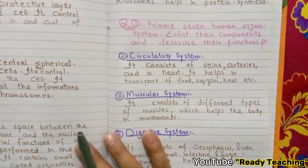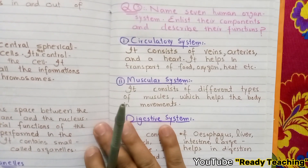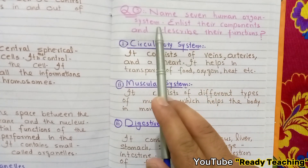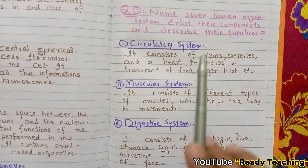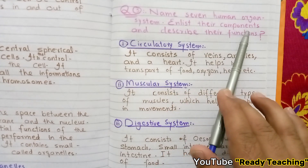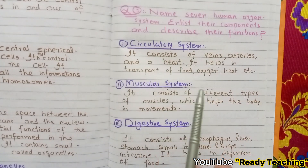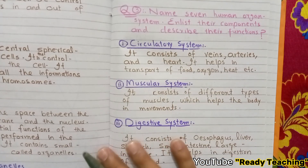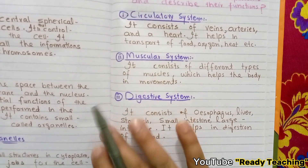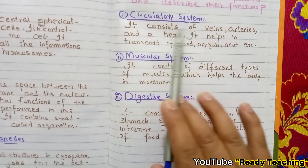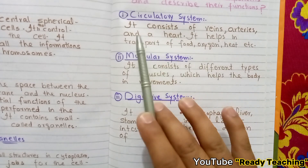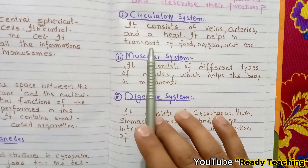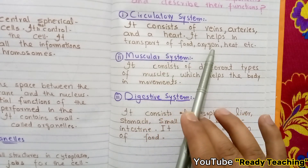Long question 3: Name the human organ systems and describe their functions. The circulatory system consists of veins, arteries, and the heart. It helps in the transport of food, oxygen, and heat throughout the body.